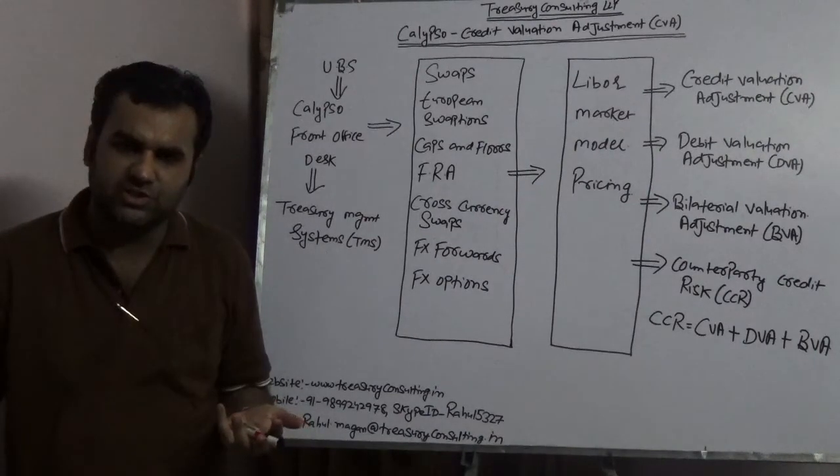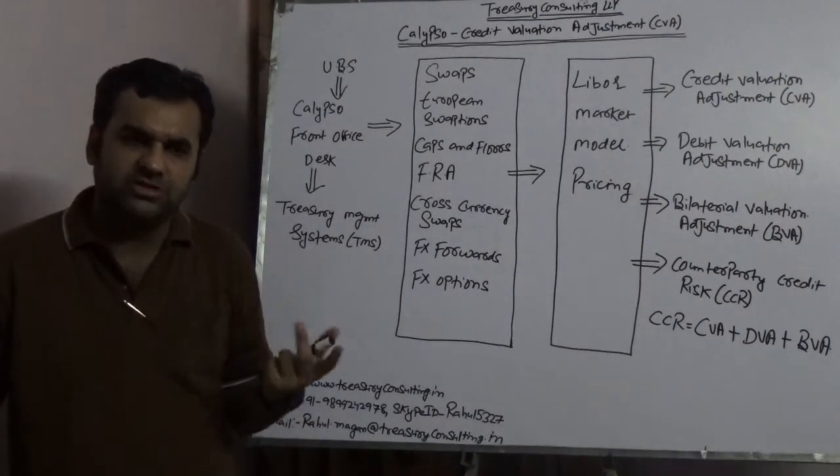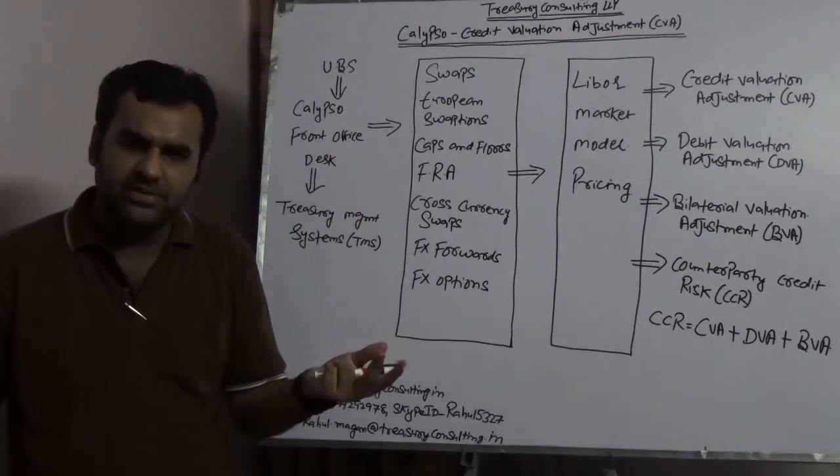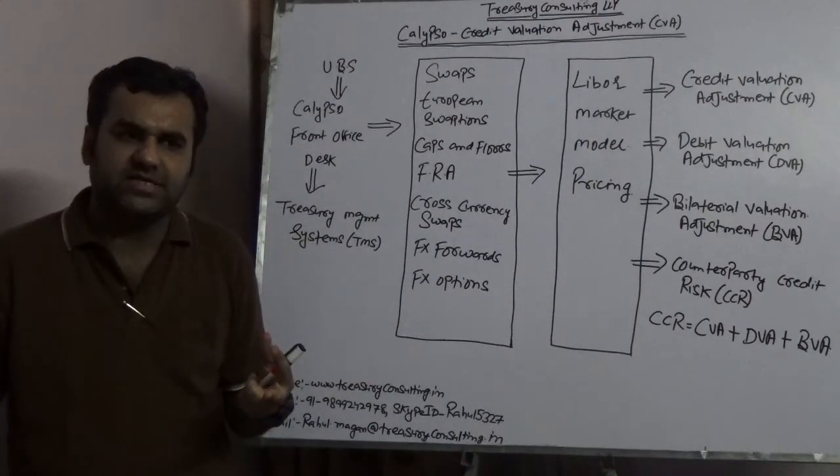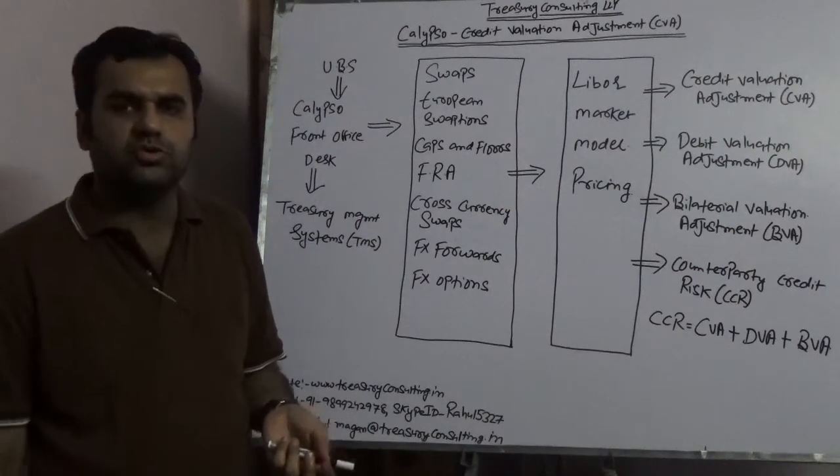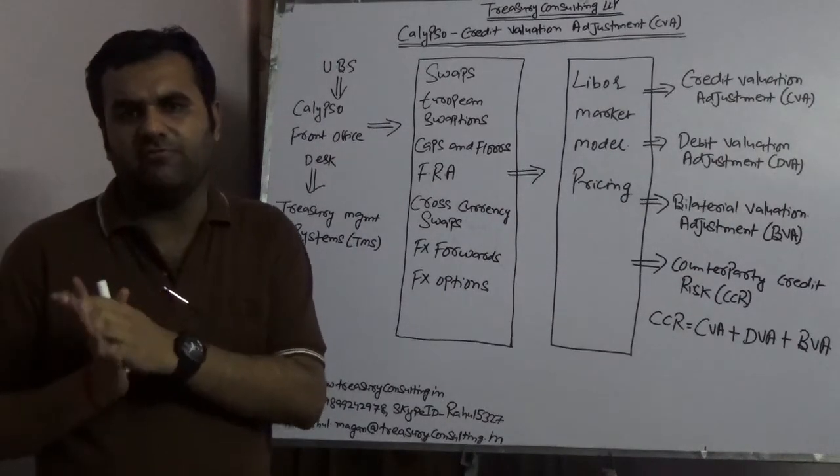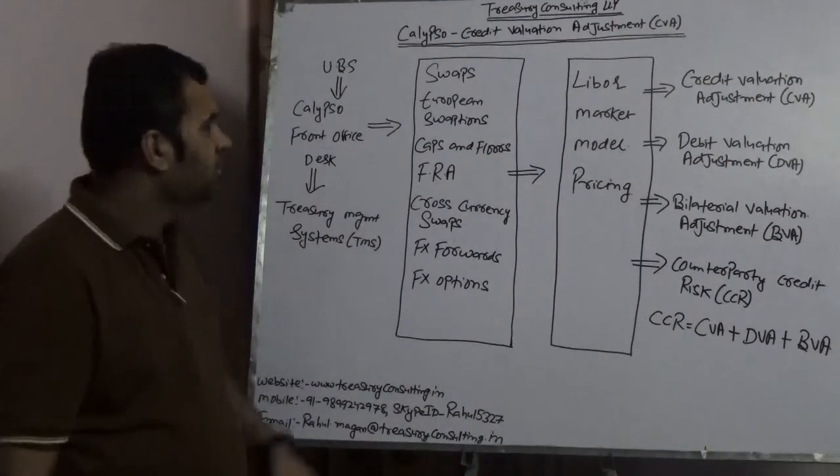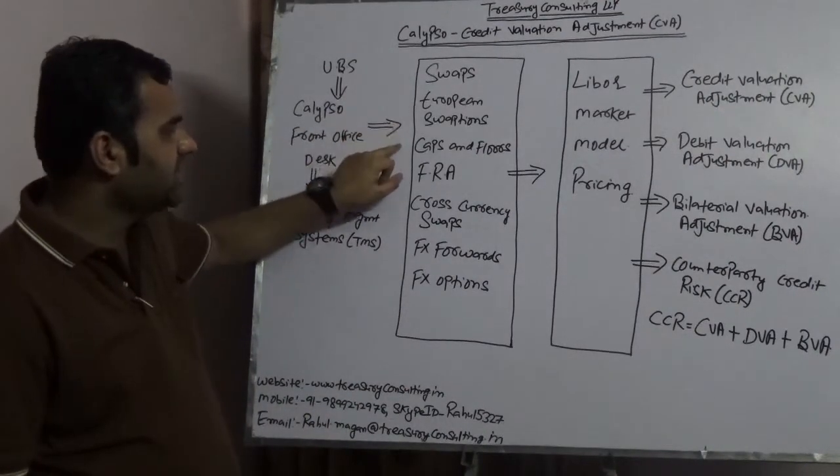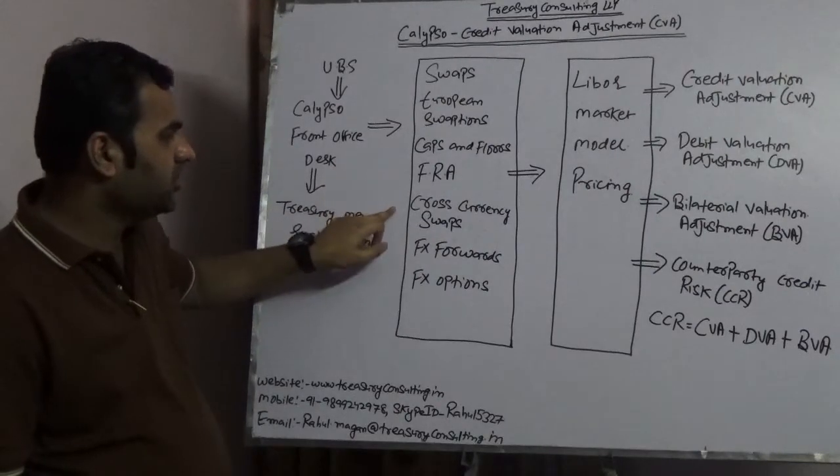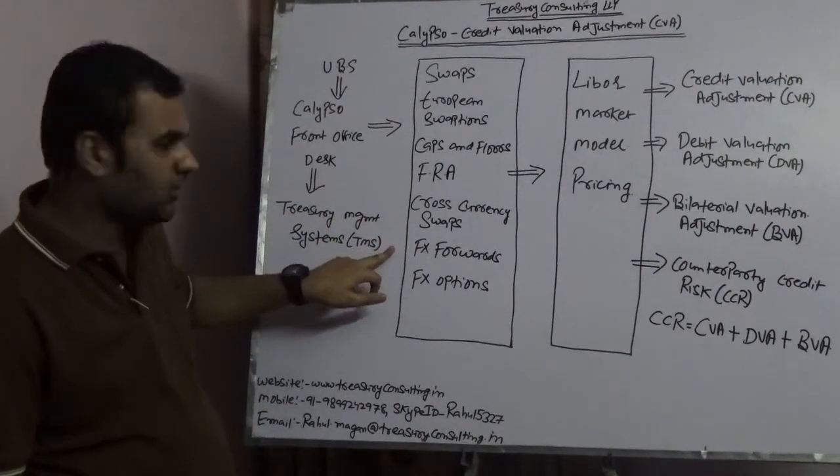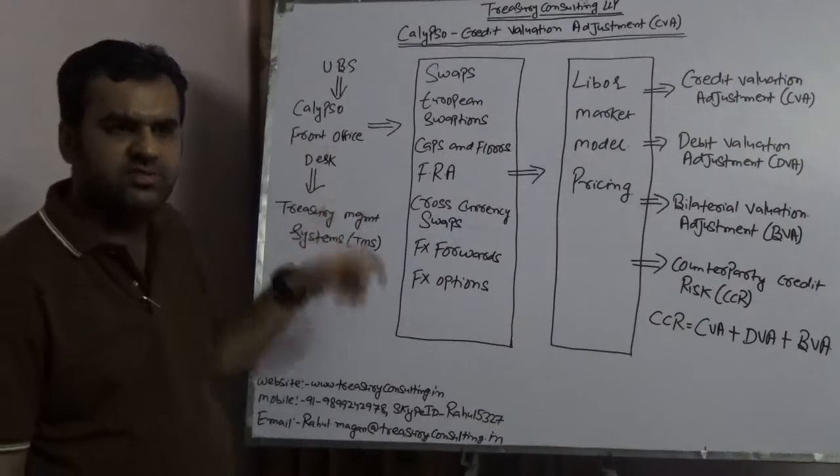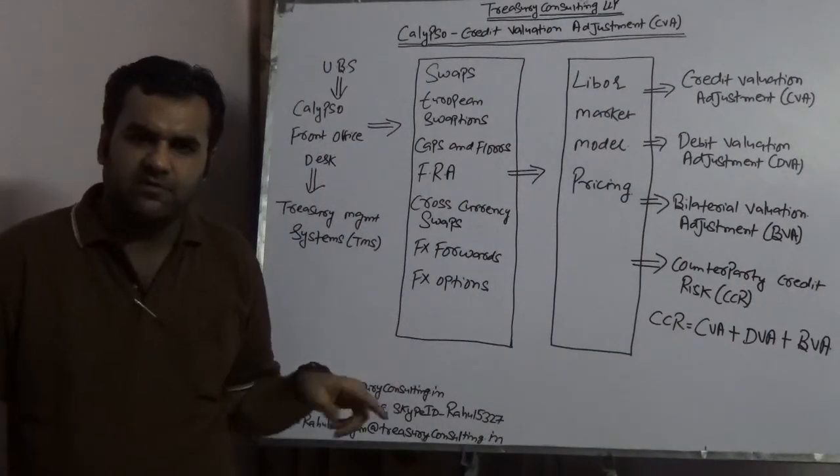The LMM model takes several input factors into consideration to give you endogenous output variables. These factors are used to hedge all exotic swaps or long-term foreign exchange instruments. If you look at any one of them—swaps, European swaptions, caps and floors, forward rate agreements, cross currency swaps, FX forwards, and FX options—none is a short instrument.